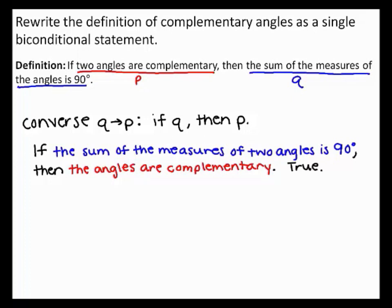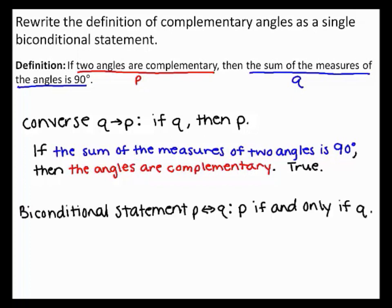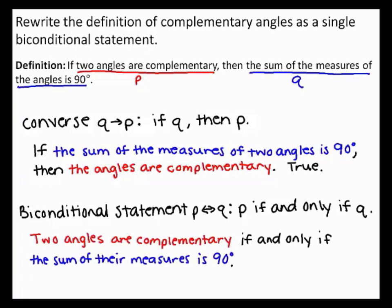Because the converse is true, you can use the definition and its converse to write the biconditional statement. A biconditional has the form P if and only if Q. So using the P and Q from the definition, the biconditional statement is: two angles are complementary if and only if the sum of their measures is 90 degrees.